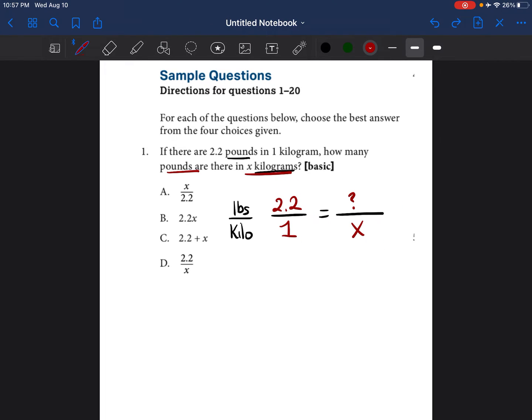So anytime you have a fraction 2.2 over 1, it's the same as saying 2.2 divided by 1. 2.2 divided by 1 is just 2.2. So if this first fraction is equal to 2.2, then this fraction, when it's complete, should also be equal to 2.2.